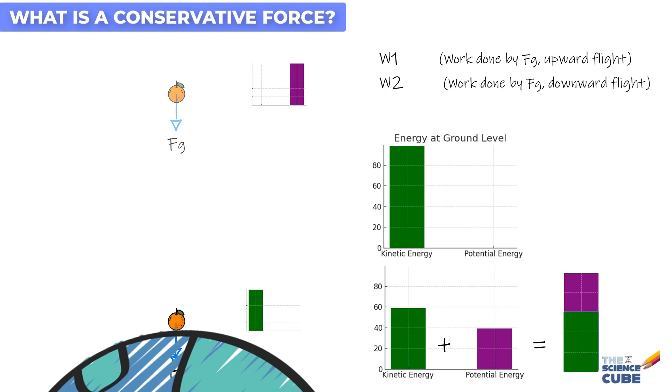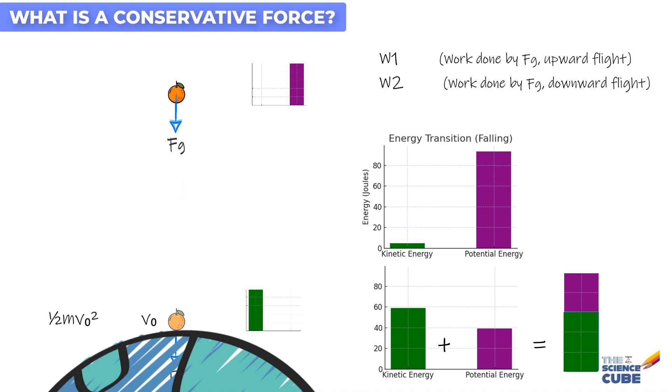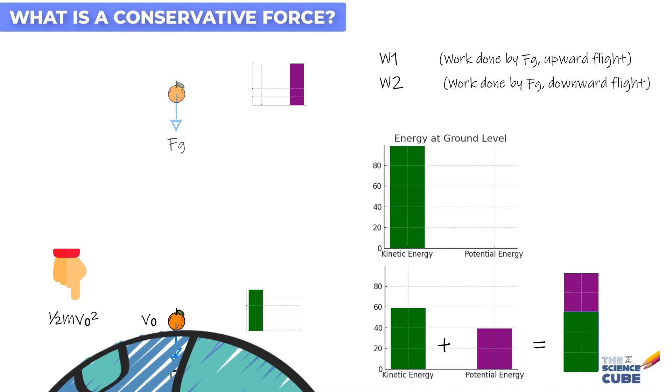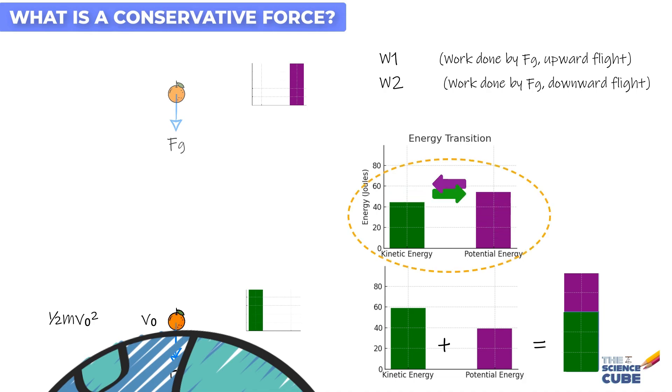So, you see, the tossed orange moves up with an initial velocity v naught and kinetic energy half mv naught square and then the gravitational force slows it down, stops it at the top and then makes it fall back towards the Earth. And when the orange returns to the initial point, we find that it again has velocity v naught and kinetic energy half mv naught square. So, you see, the gravitational force has transferred as much energy from the orange during the upward flight as it transferred back to the orange during the downward flight to the initial point. So, if a force enables two-way conversion of energy between kinetic energy and potential energy without any loss of energy, we call it a conservative force. And now you know why we call it conservative. Simply because it conserves energy.